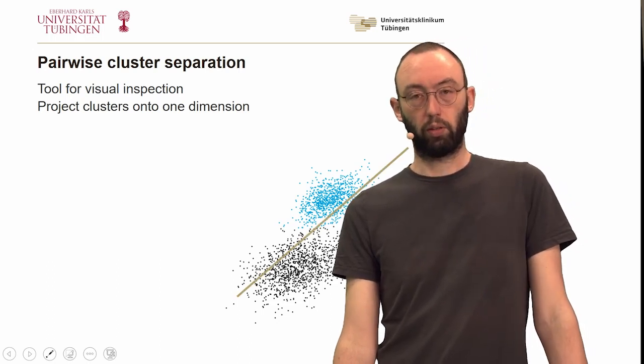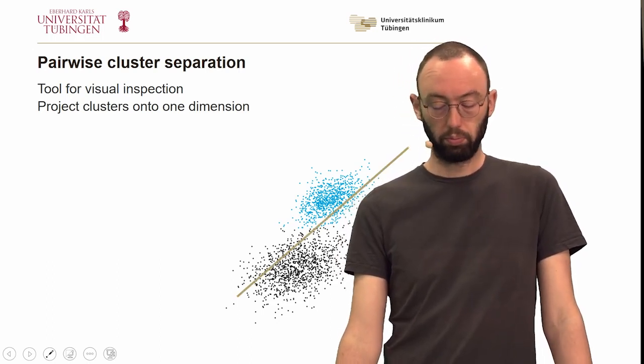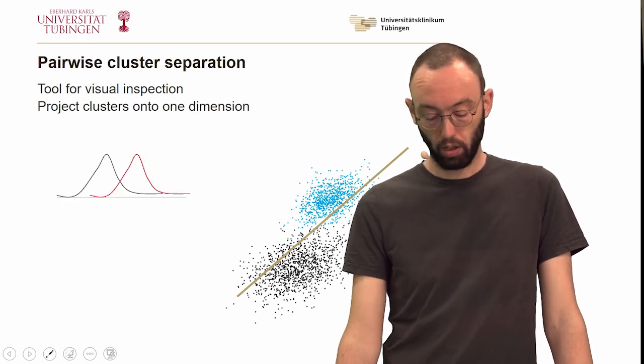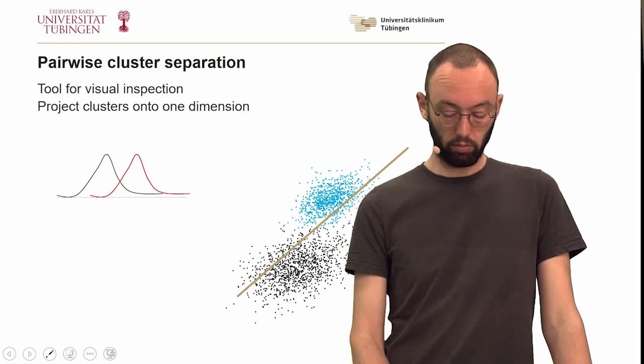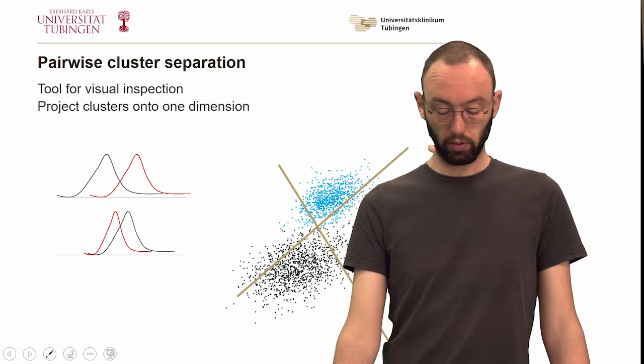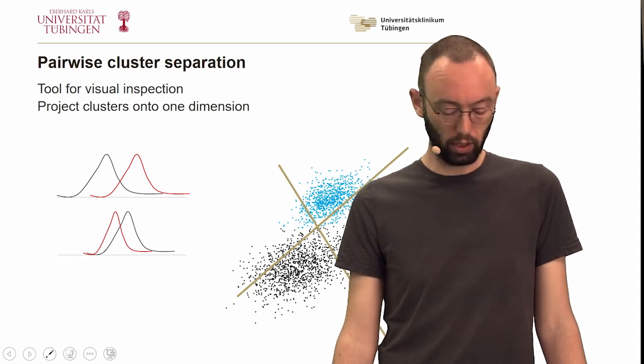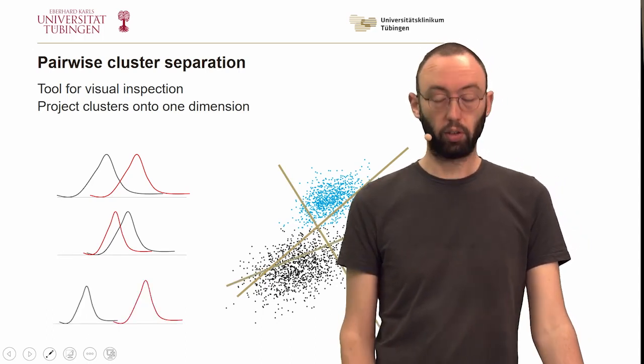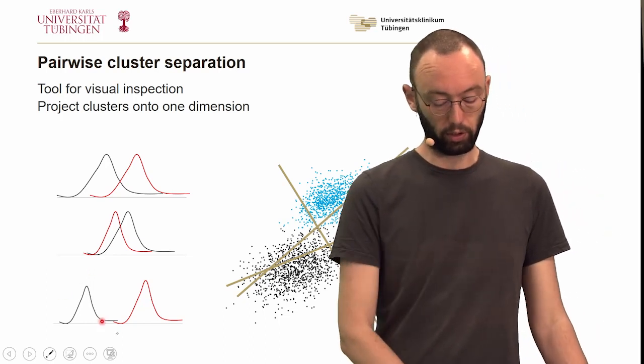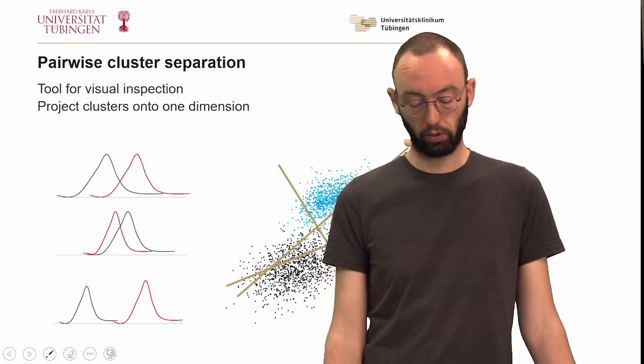Which dimension should we pick? We could pick this dimension, and that would be rather arbitrary. They would be separated like this here, the black and the red cluster. We could pick this direction, then they would be highly overlapping. Or we could pick the optimal direction to separate them, and then they would be nicely separated like this. So how do we find this optimal direction?